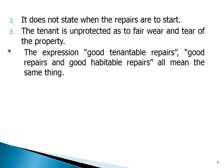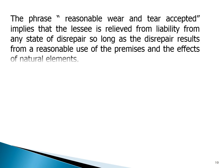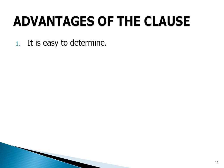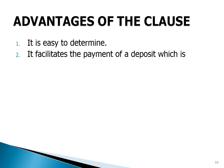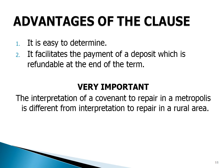The expressions 'good and tenantable repairs,' 'good repairs,' and 'good habitable repairs' all mean the same thing. The phrase 'reasonable wear and tear excepted' implies that the lessee is relieved from liability for any state of disrepair so long as that disrepair results from reasonable use of the premises and the effect of natural elements. Advantages of this clause: one, it is easy to determine; two, it facilitates the payment of deposit which is refundable at the end of the term. The interpretation of a covenant to repair in a metropolis is different from its interpretation in a rural area.